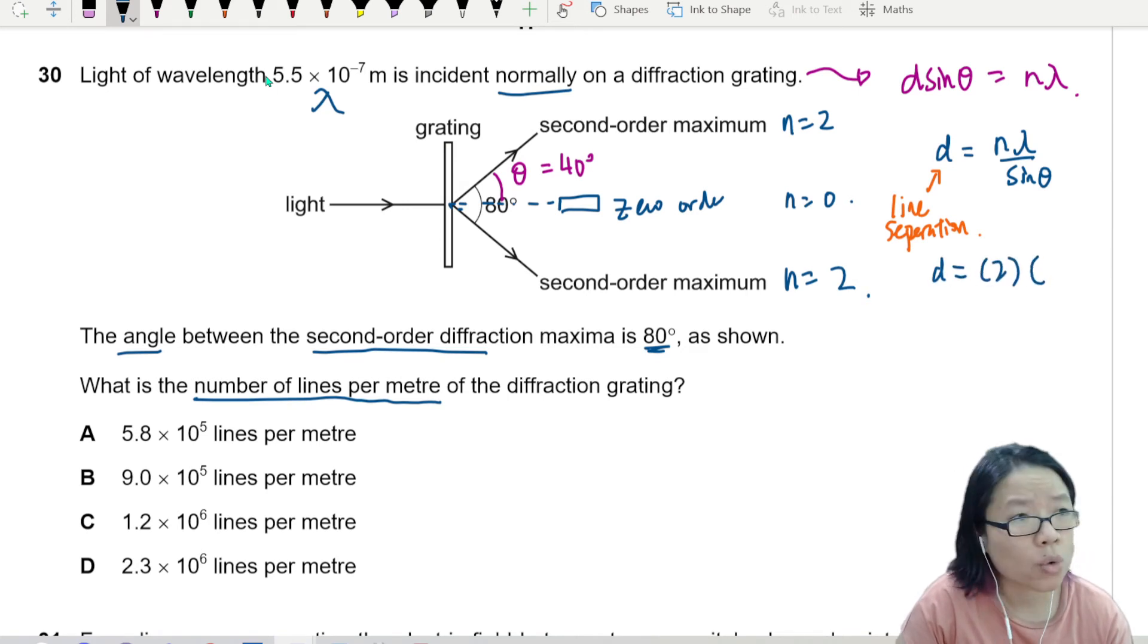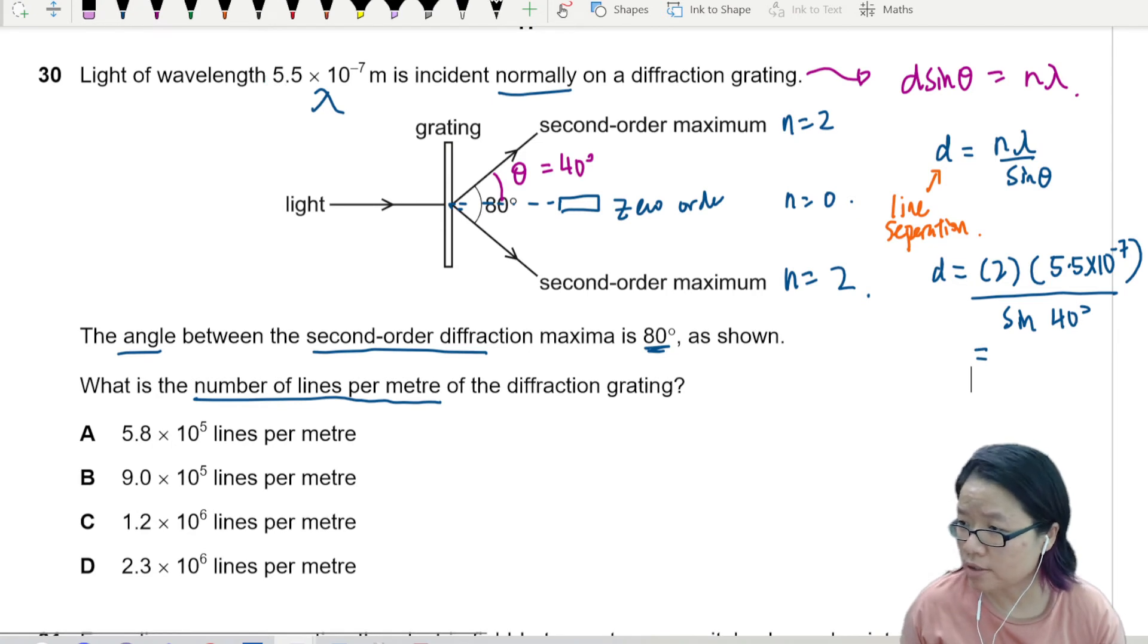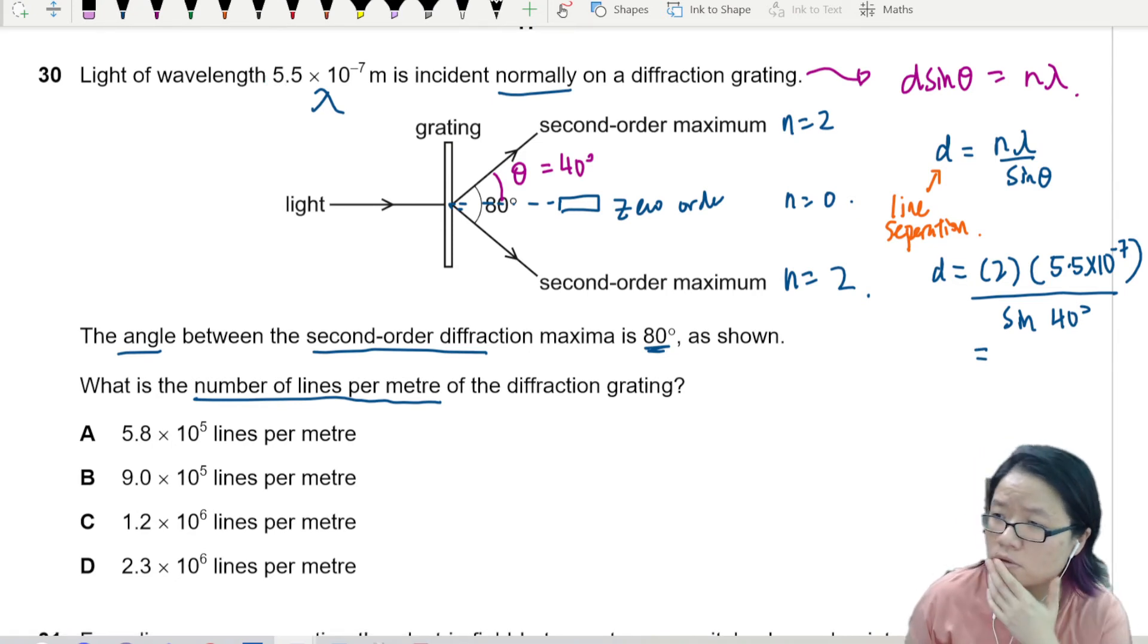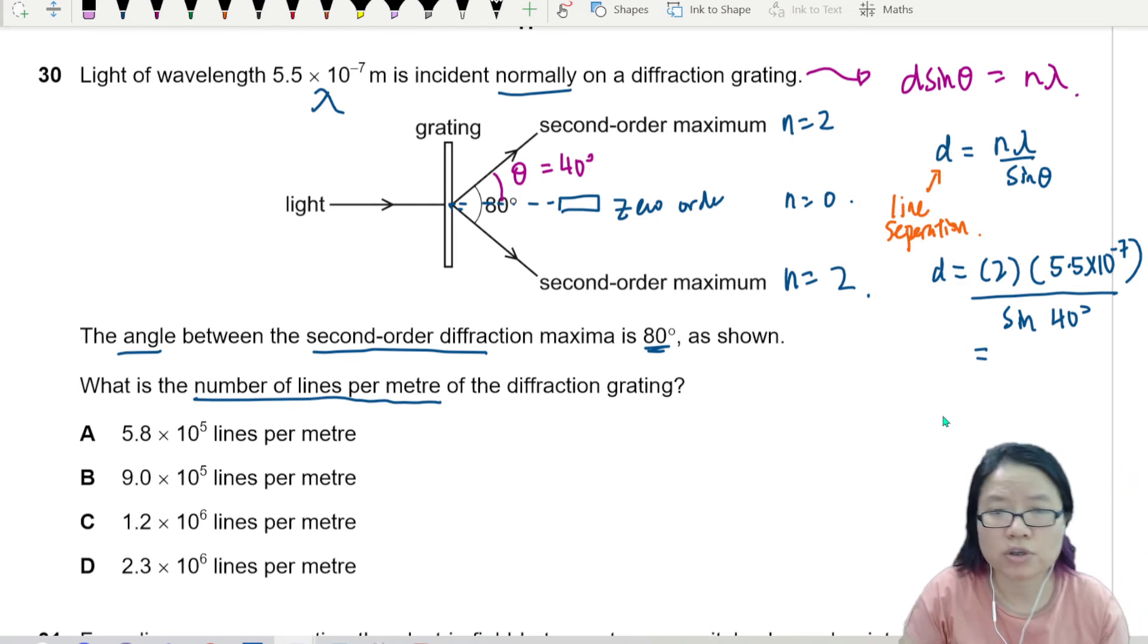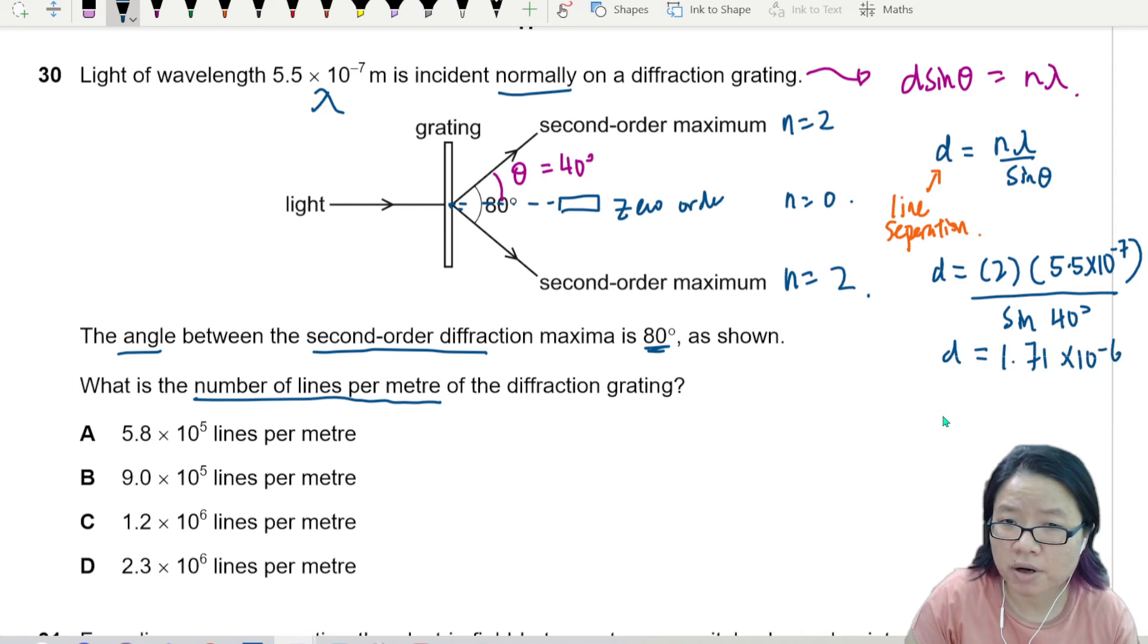n is 2, wavelength is 5.5 × 10^-7, sine 40 degrees. So if I press my calculator, this will give me the value of 1.71 × 10^-6 meter. Okay?